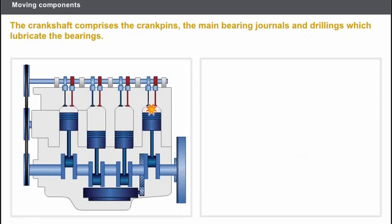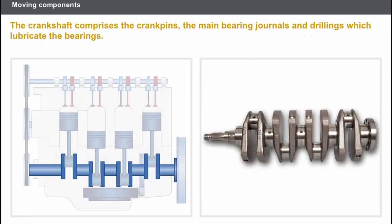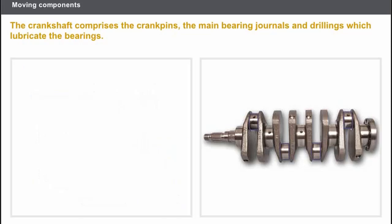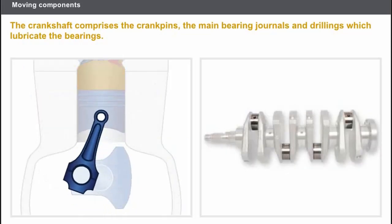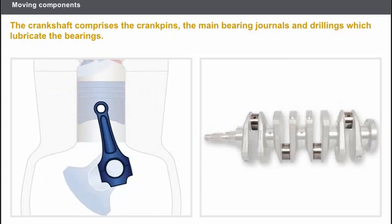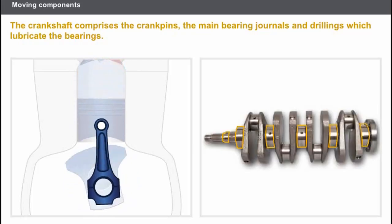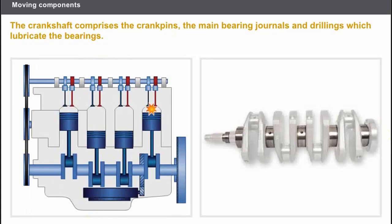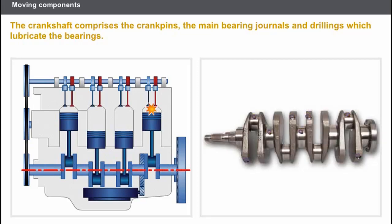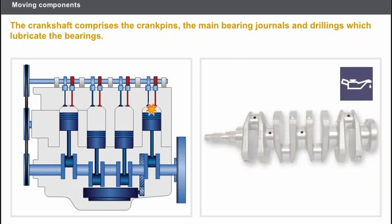The crankshaft transmits the mechanical energy to the valve timing and to the transmission. It is a shaft made of cast iron or forged steel, which rotates inside the bearings fixed to the lower section of the cylinder block. The crank pins link the bearings to the crankshaft and are subjected to a special mechanical treatment to prolong their lifespan. The main bearing journals act as a guide during rotation and are also subjected to mechanical treatment. The drillings lubricate the crank pin bearings and the main bearing journals.